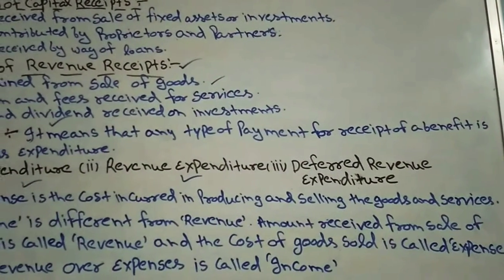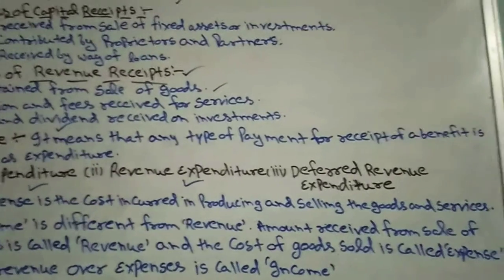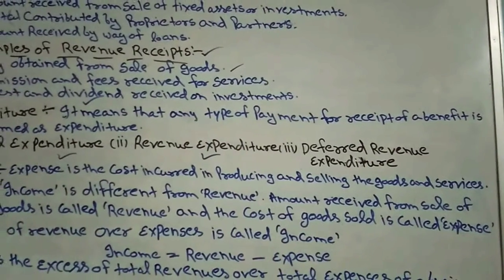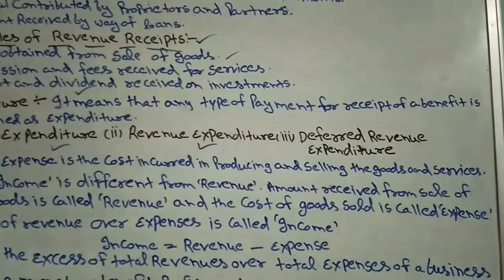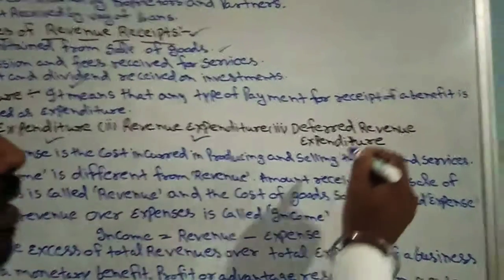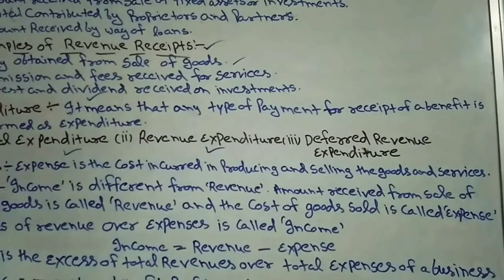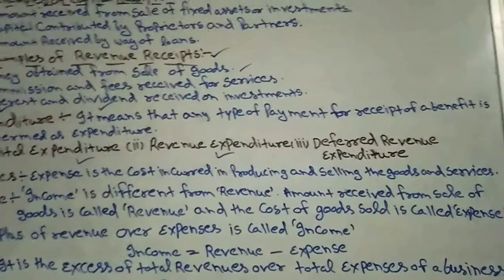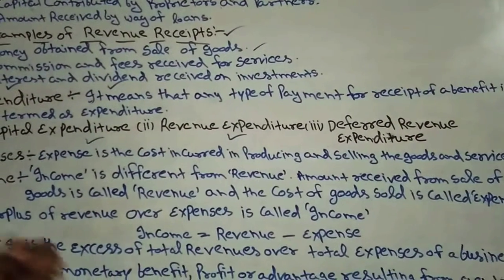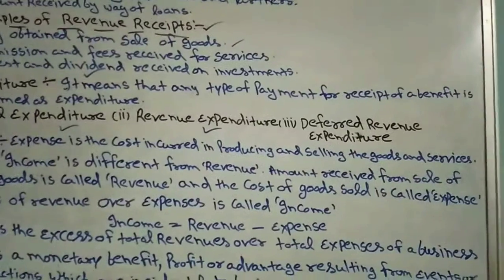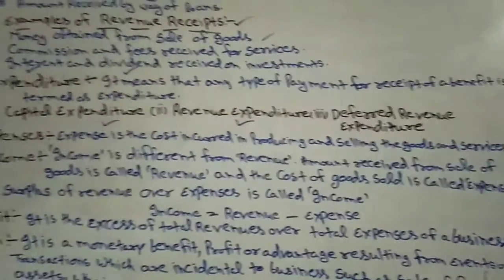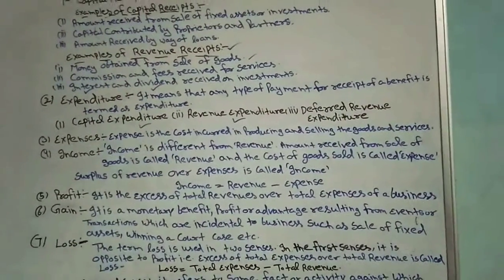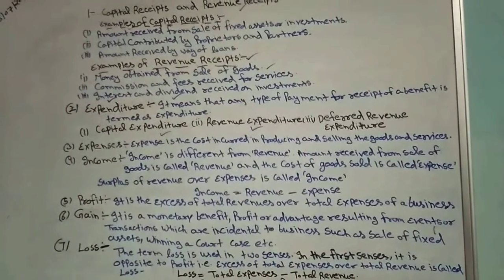The next point is deferred revenue expenditure. These are expenditures that we incur in one year but whose benefits we keep receiving for many coming years — that is called deferred revenue expenditure. For example, suppose we did advertisement in 2015, so the benefit of that advertisement will be received for coming years 2016, 2017, 2018 — that is called deferred revenue expenditure.